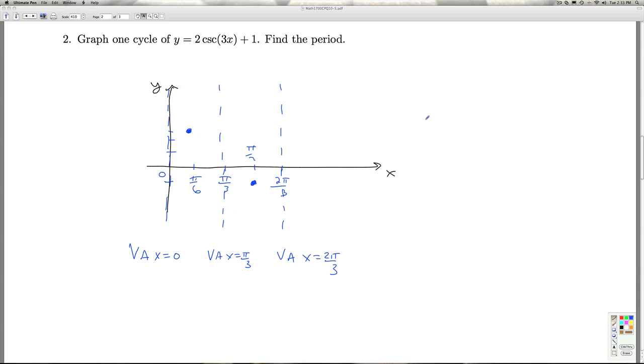We know the standard cosecant curve has two branches with a gap between them. When we fill in the graph, the curve hugs the vertical asymptotes, but we want to maintain this gap. So we fill these in to get the gap in the middle as we should, creating the gap in the range of the function.